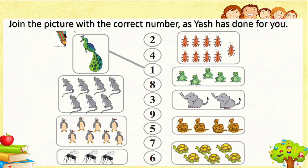Here is one activity: join the picture with the correct number, as Yash has done. Here we can see pictures and numbers from 1 to 9. We proceed: here is one peacock, so we draw a line to 1. Here we can see mice — 1, 2, 3, 4, 5, 6, 7 — seven mice, so we draw a line to 7.